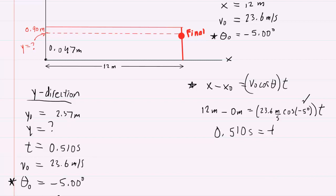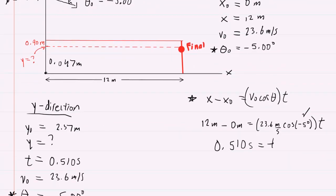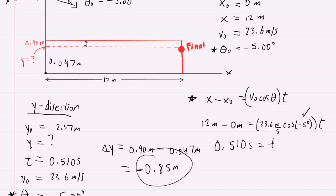The ball does not clear the net — that's the answer to part C. For part D, the distance between the center of the ball and the top of the net is delta y equals 0.9 meters minus the final y-coordinate of 0.047 meters, giving about 0.85 meters. Your homework system might want this entered as negative 0.85 meters because the ball has fallen below the level of the net, so you may need to include a negative sign for the final answer to part D.